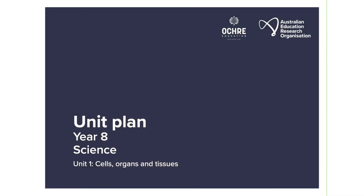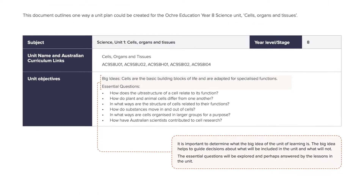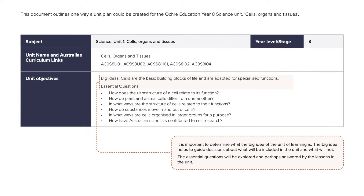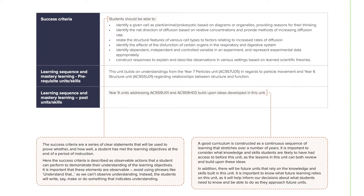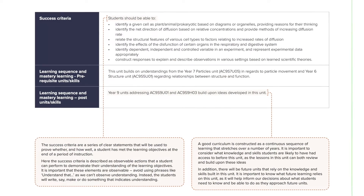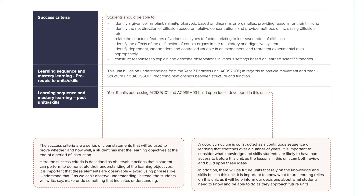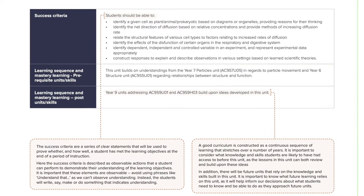I have to think: if I want students to be able to apply an understanding of diffusion to the way organ systems in the human body function, what are the little steps along the way to understanding that? How can I chunk the content to be taught into smaller parts and then sequence those parts like little steps along the way to the destination?